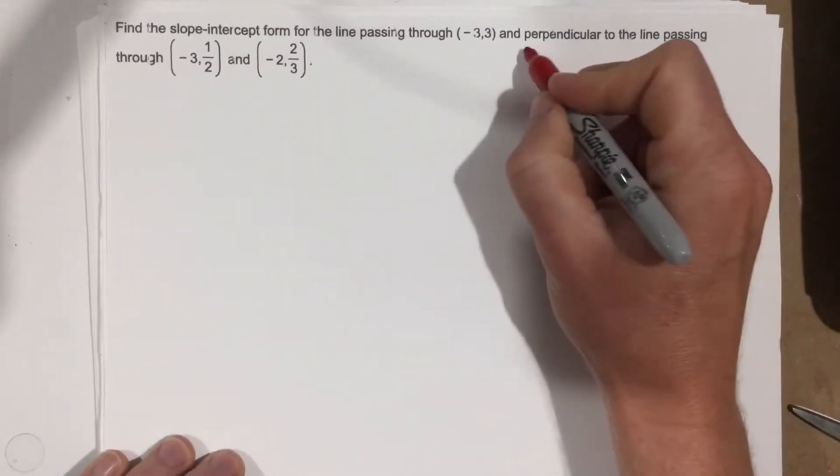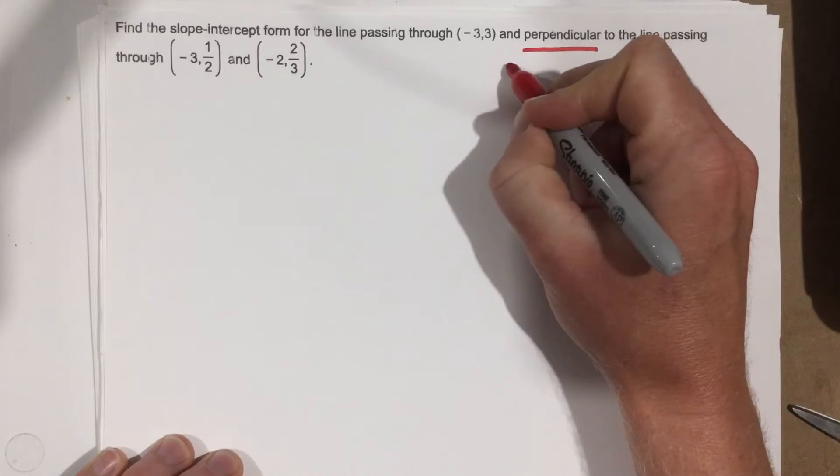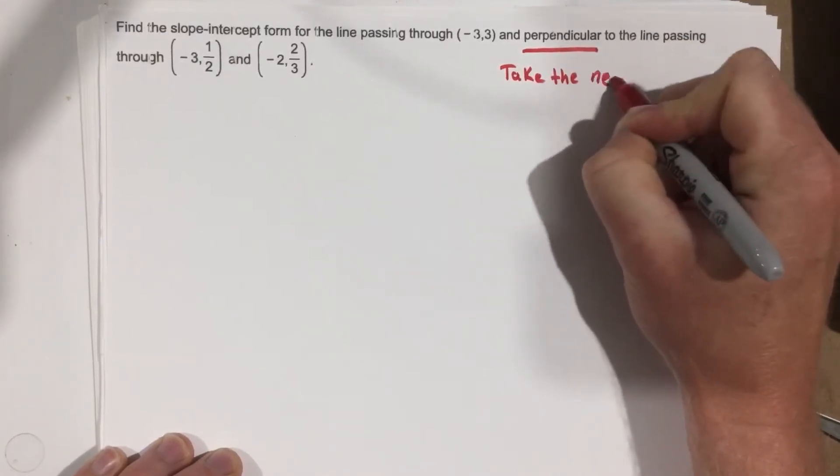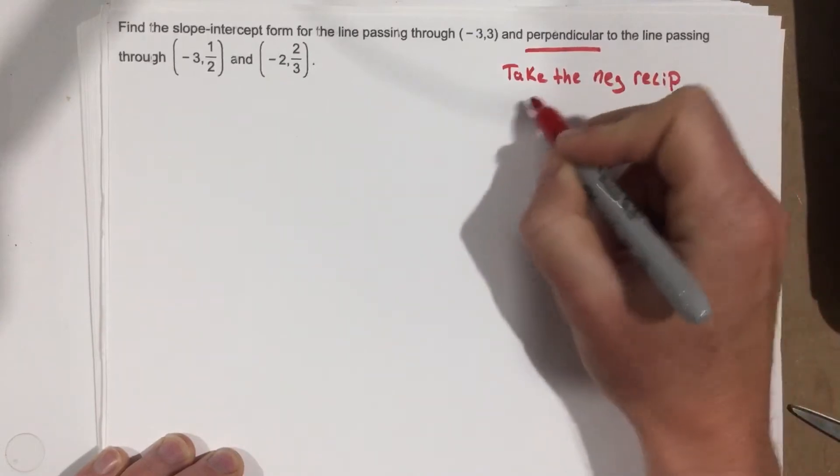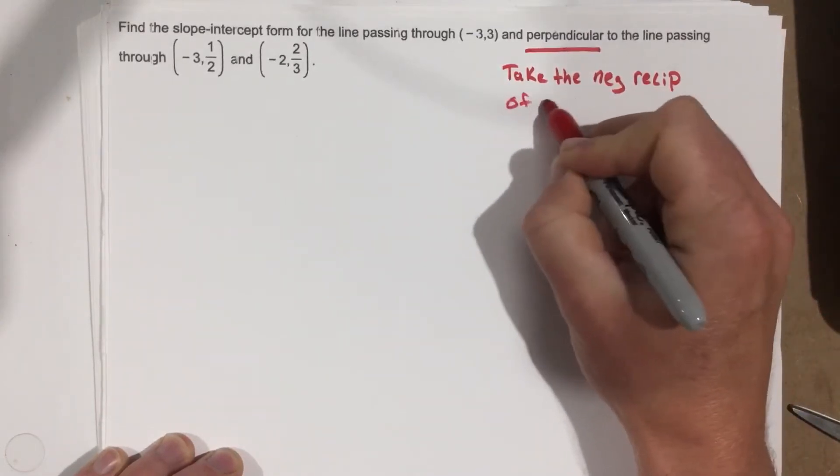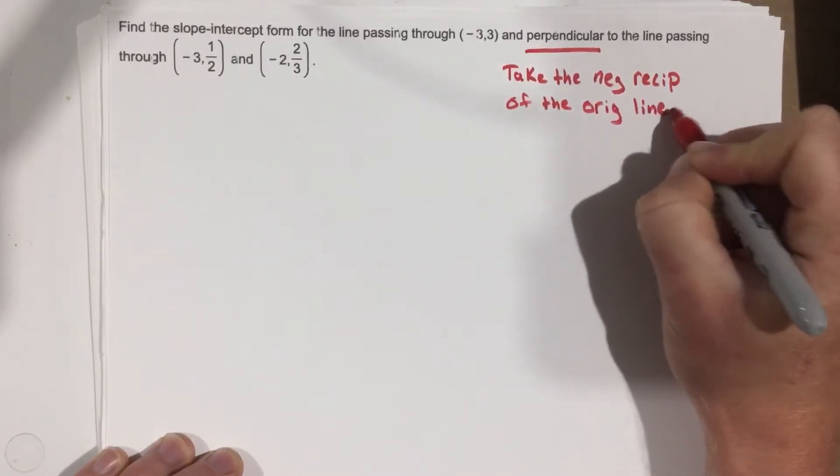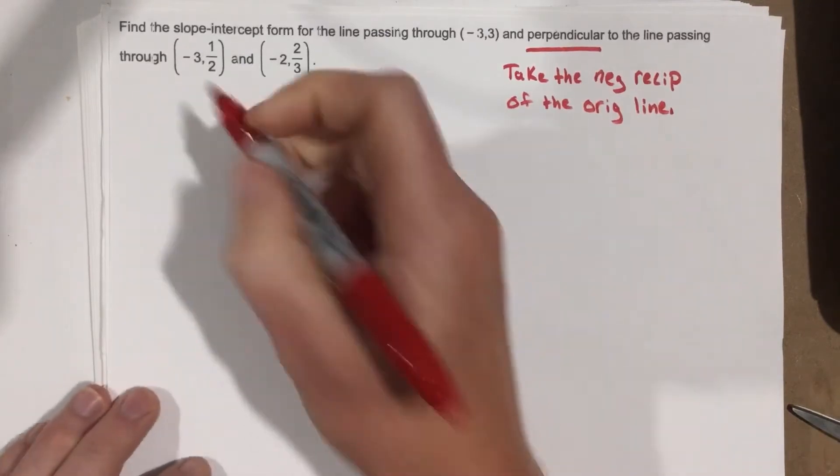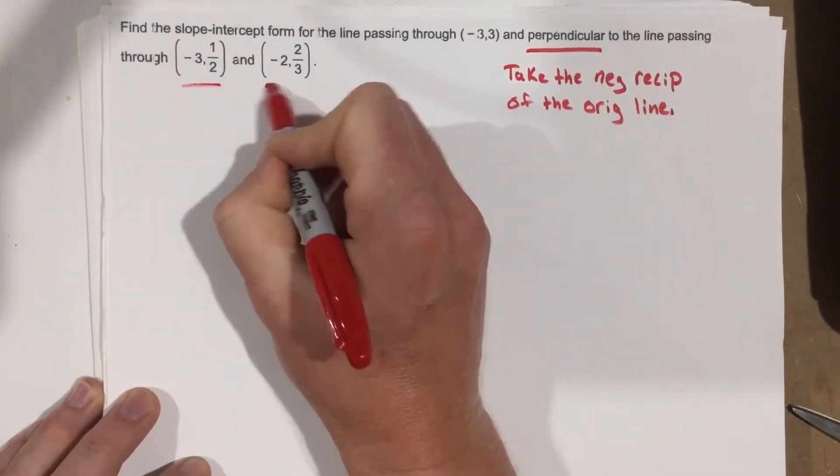So perpendicular—remember, perpendicular means we're going to take the negative reciprocal of the original line. So that's what perpendicular means. Now the original line is going to go through this point and this point. So this is the original line.